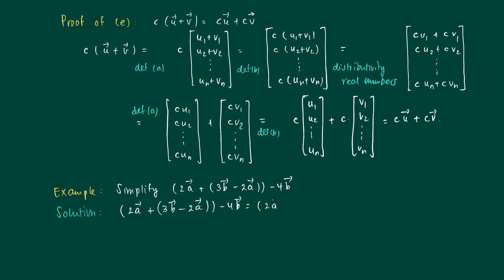Equals 3b minus 2a, which is 3b plus minus 2 times a. So we have minus 2 times a plus minus 4 times b.